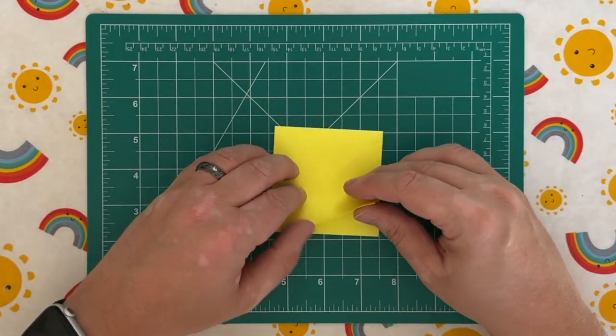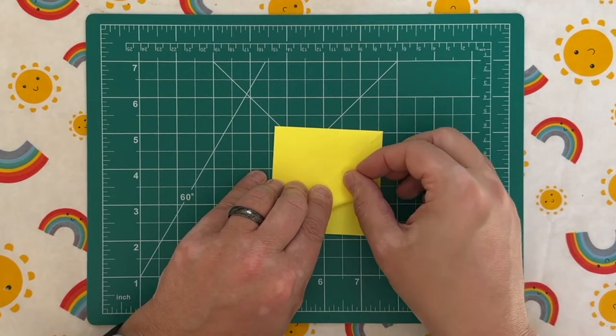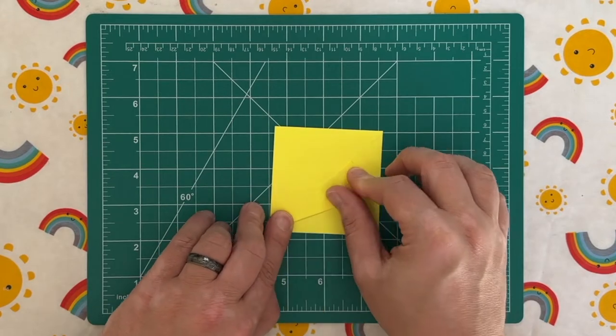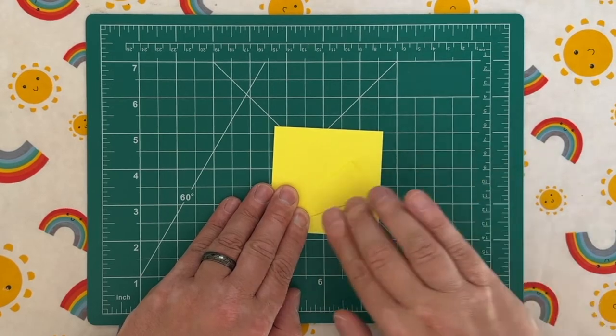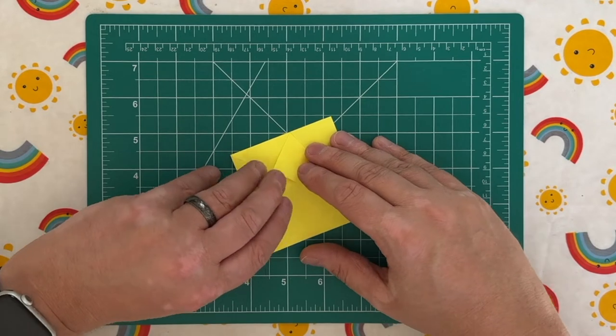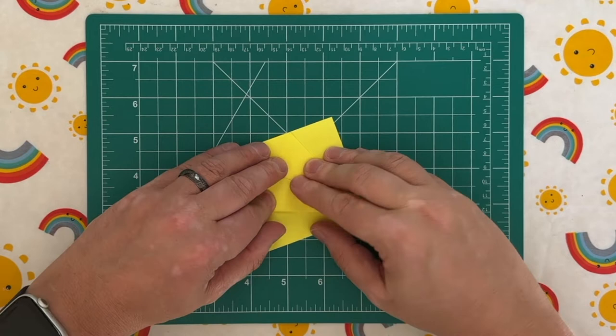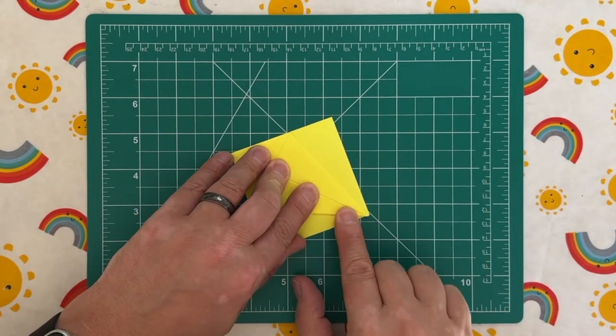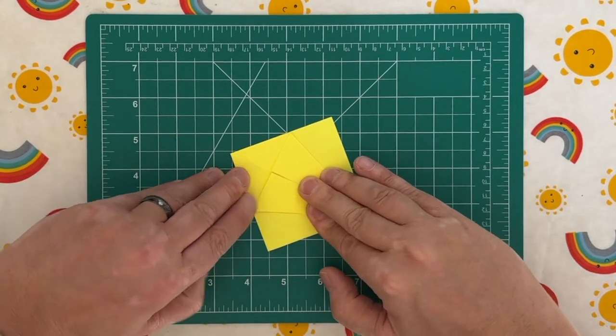Now make sure you've got the open end, not the closed end, facing towards you. And you now need to fold the corners towards the middle like so. So we do that on both sides. And again I'm going to make sure I really crush those folds down with my fingernail. Do the same on this side, try and create as sharp of a point as you can.